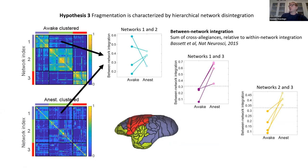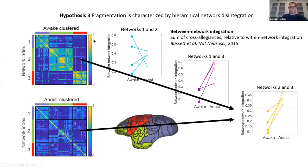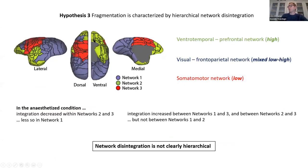We then calculate between-network integration — effectively the sum of cross-allegiances relative to within-network integration. Networks one and two are not smearing into one another, but networks one and three absolutely do begin to smear — you can see it goes from dark blue to lighter blue. We see the same thing between networks two and three. So it's happening in most of the networks, but not all.